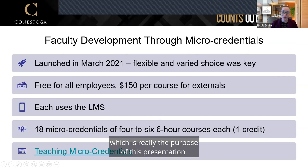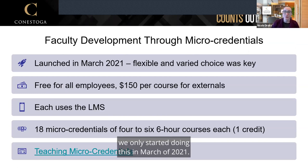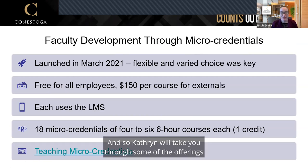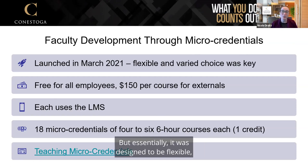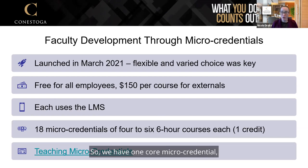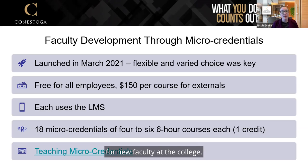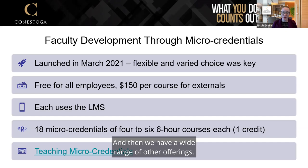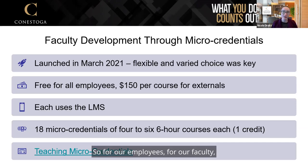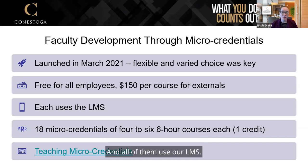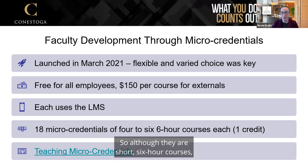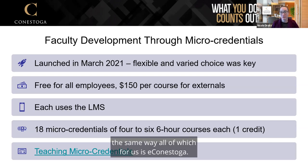When it comes to faculty development — really the purpose of this presentation — we only started doing this in March 2021. It was designed to be flexible, and having a lot of choice was key for faculty. We have one core micro-credential called Teaching at Conestoga, which is required for new faculty and consists of four courses. Beyond that, there's a wide range of offerings for faculty, administrative and support staff — free for employees but available to external participants as well. All courses are six hours, worth one credit each, and delivered through our LMS, eConestoga.